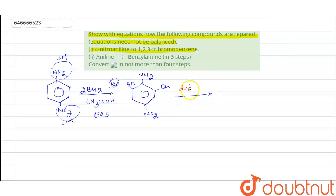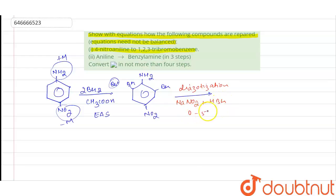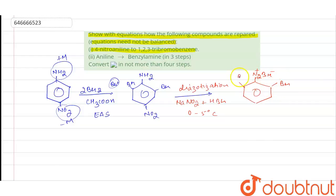Next, we do the diazotization reaction — reaction of this compound with NaNO₂ plus HBr at very low temperature, 0 to 5°C. Here we get our product as a diazonium salt: N₂⁺ Br⁻, with two Br substituents and an NO₂ group.